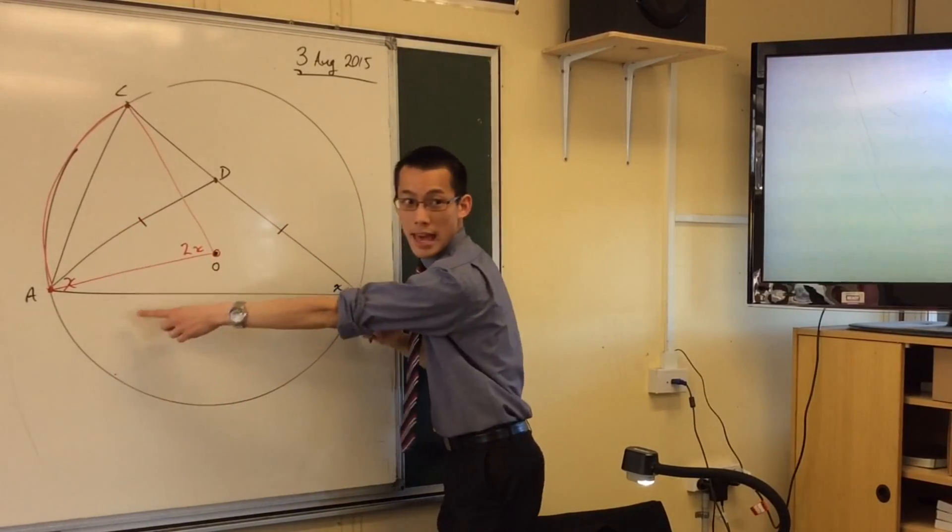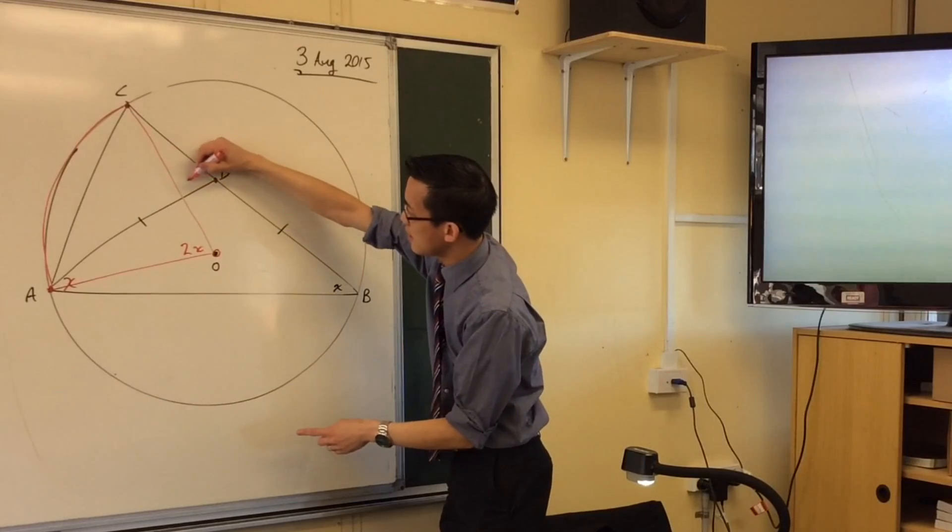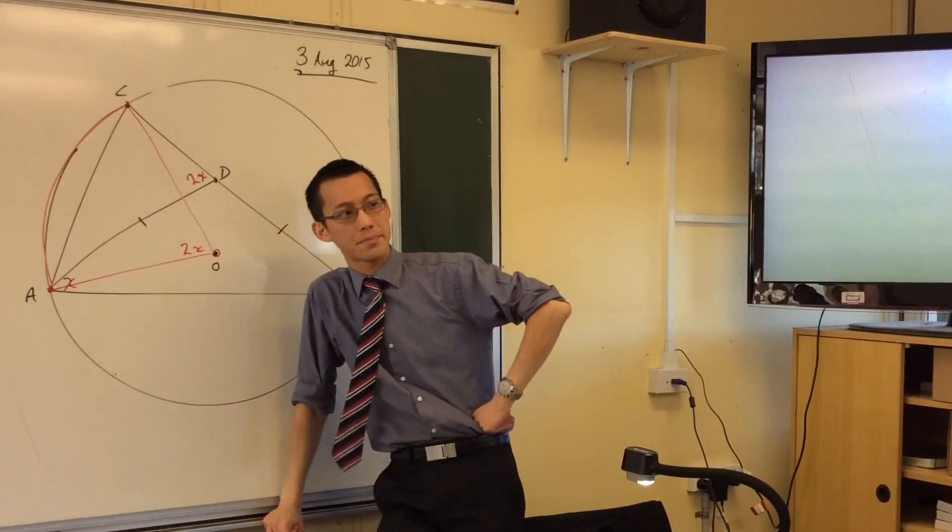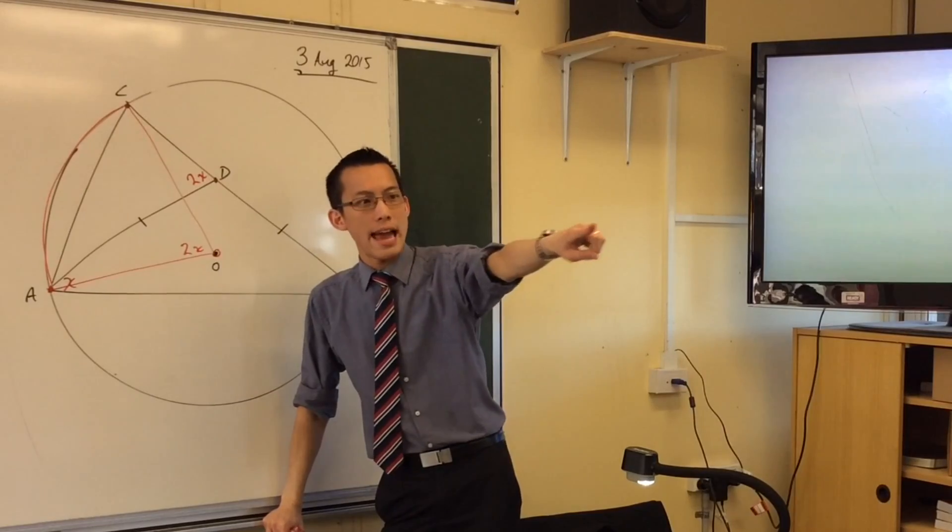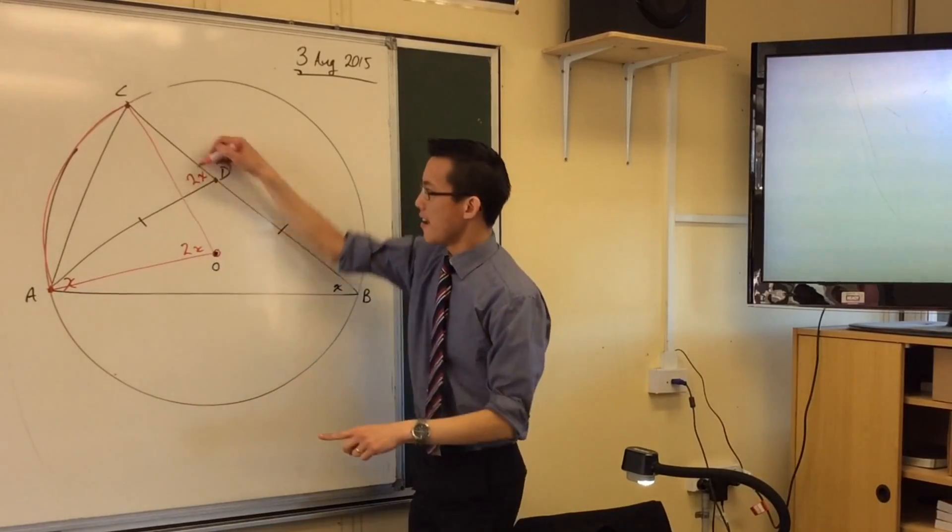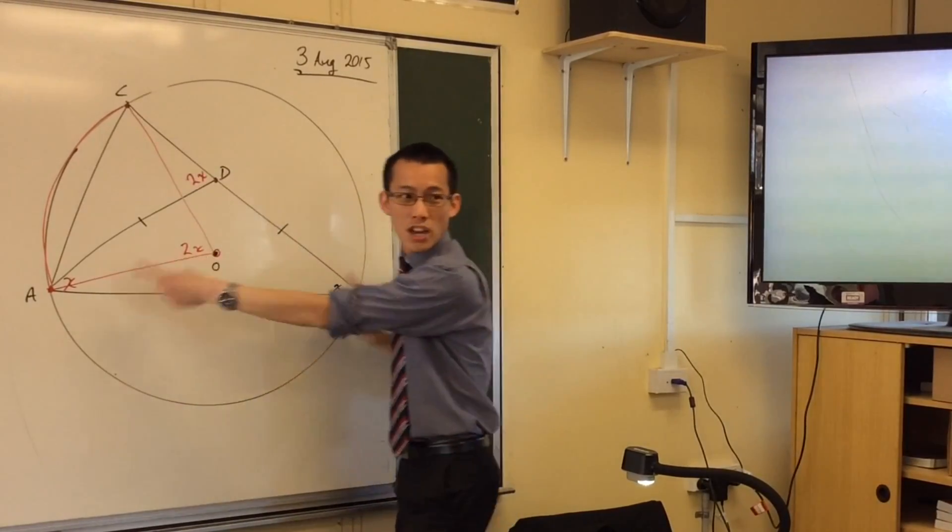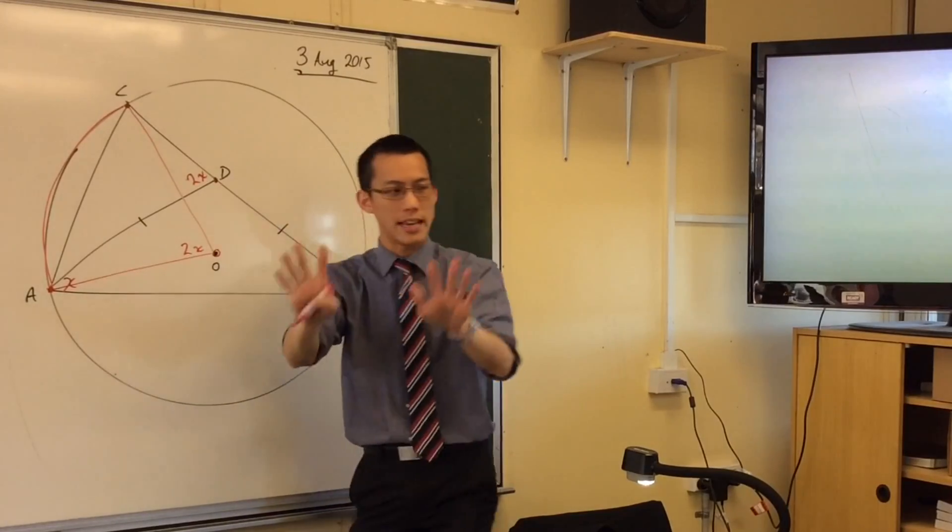Now, if these two are both x, then you can see that this guy over here is 2x. Reason? The exterior angle of the triangle is equal to the sum of the opposite two interior angles. Now, pause for a second.